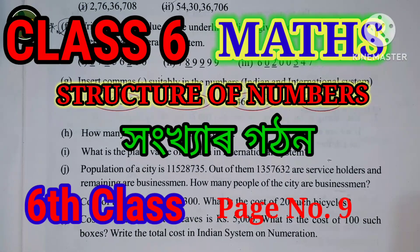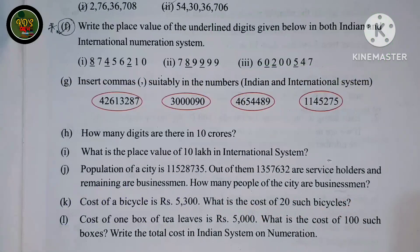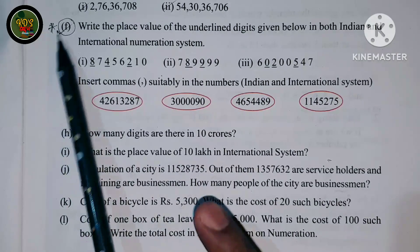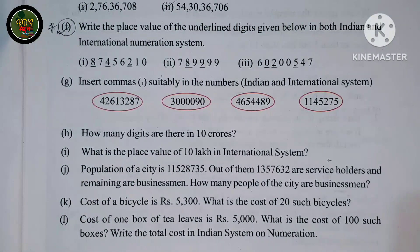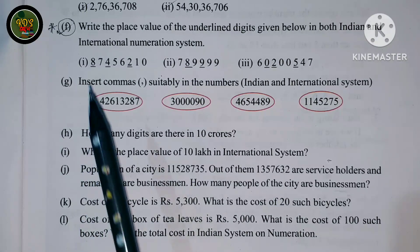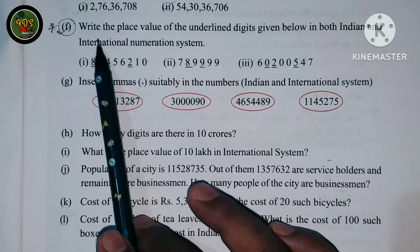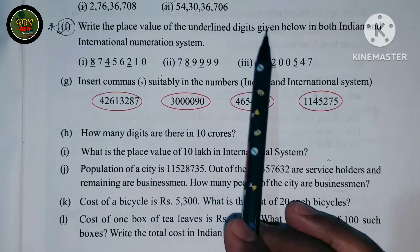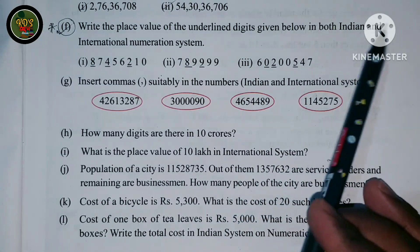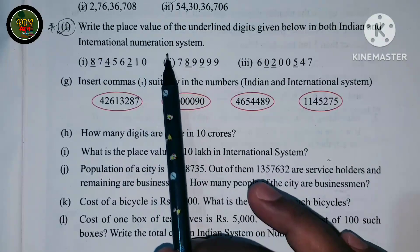Hello everyone, welcome to my channel. Today we are going to talk about F number 9 and F number 15. We are going to write the place value of the underlined digits given below in both the Indian and International numeration systems.